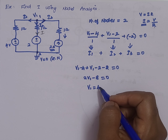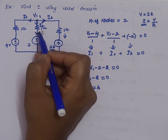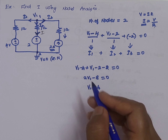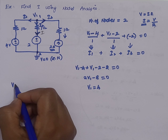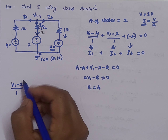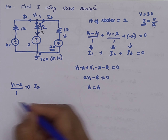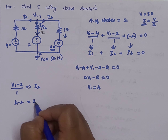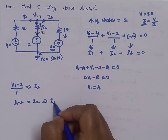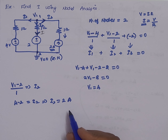We are supposed to calculate the current I2 flowing in this branch. I2 = (V1 − 2) / 1. Substituting V1 = 4: I2 = (4 − 2) / 1 = 2 amperes. This is the procedure to solve using nodal analysis.